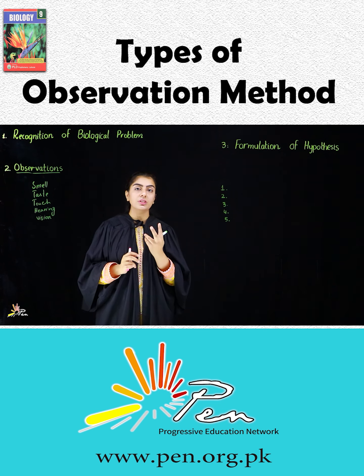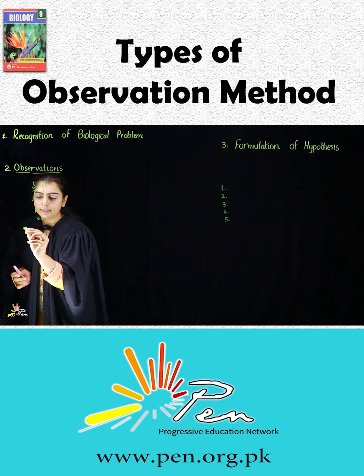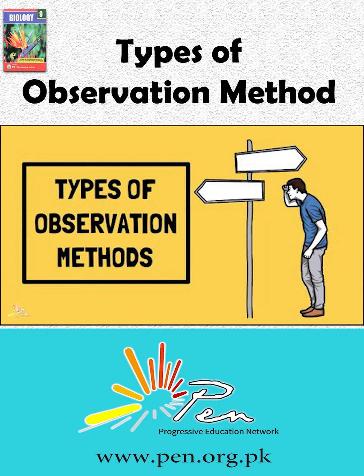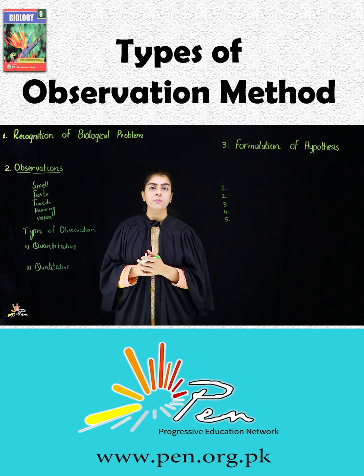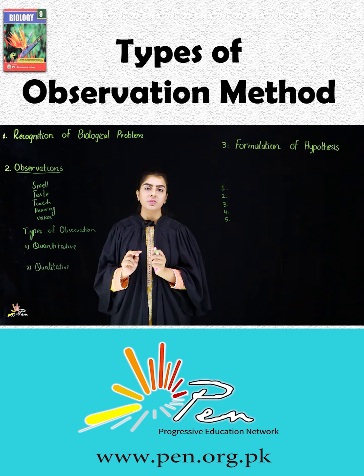Now it comes to the types of observations. There are two types of observations: the first one is quantitative observation and the second one is qualitative observation. What is the difference between quantitative observation and qualitative observation?